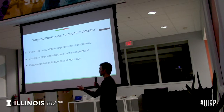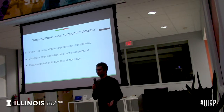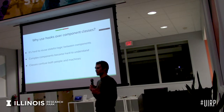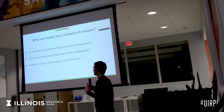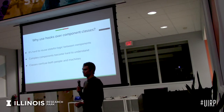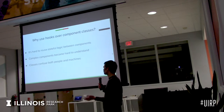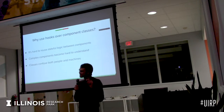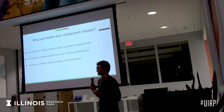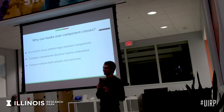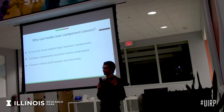I also think classes can confuse machines. Minifiers and transpilers have a lot of trouble with classes still, partially because they're so new and there hasn't been time to optimize. Right now your bundle size could be slightly smaller if everything was functions instead of classes — though if you add in the React Hooks API, your bundle will actually probably get a little bit bigger.